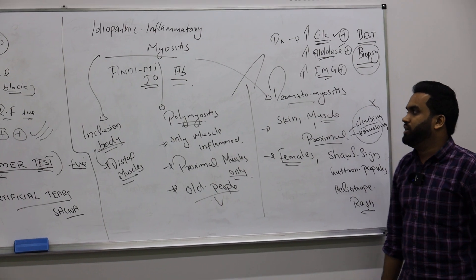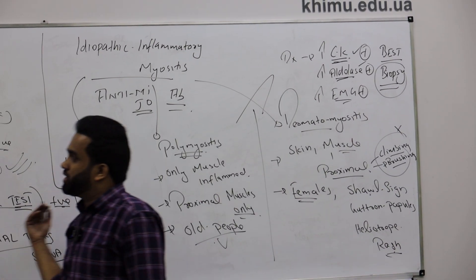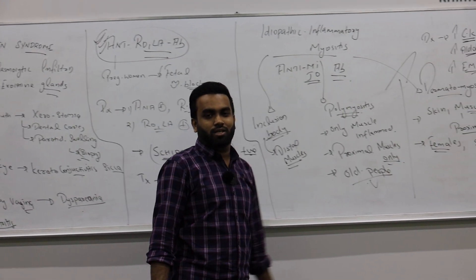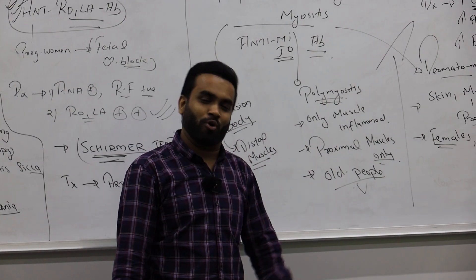To treat, give steroids. For sure it is autoimmune. This all are autoimmune disorders coming in rheumatology section. Sjogren syndrome and myositis. Dermato and poly are most important. Thank you.